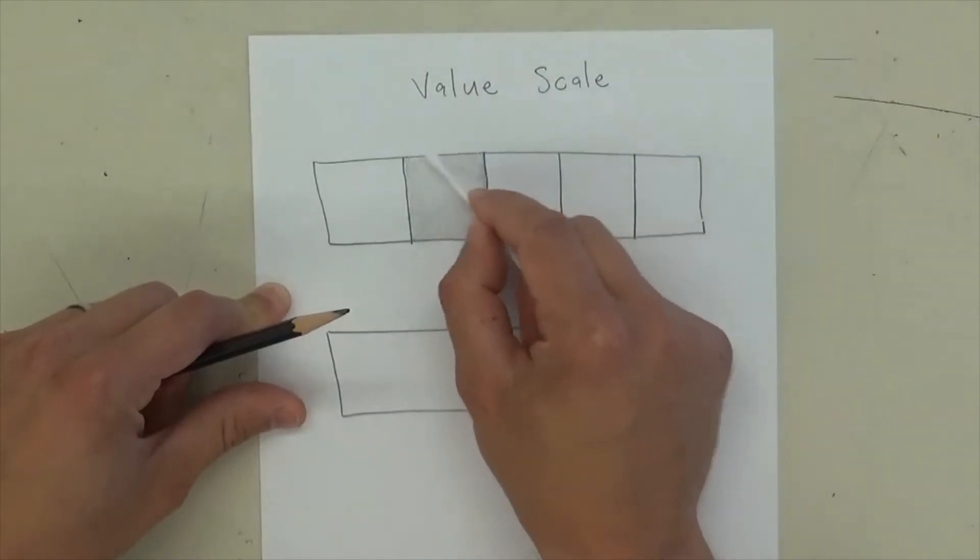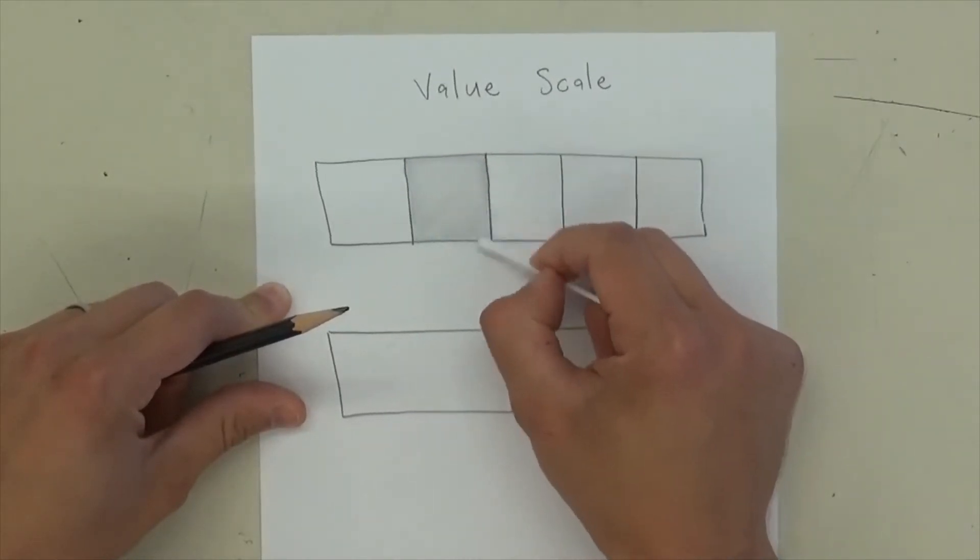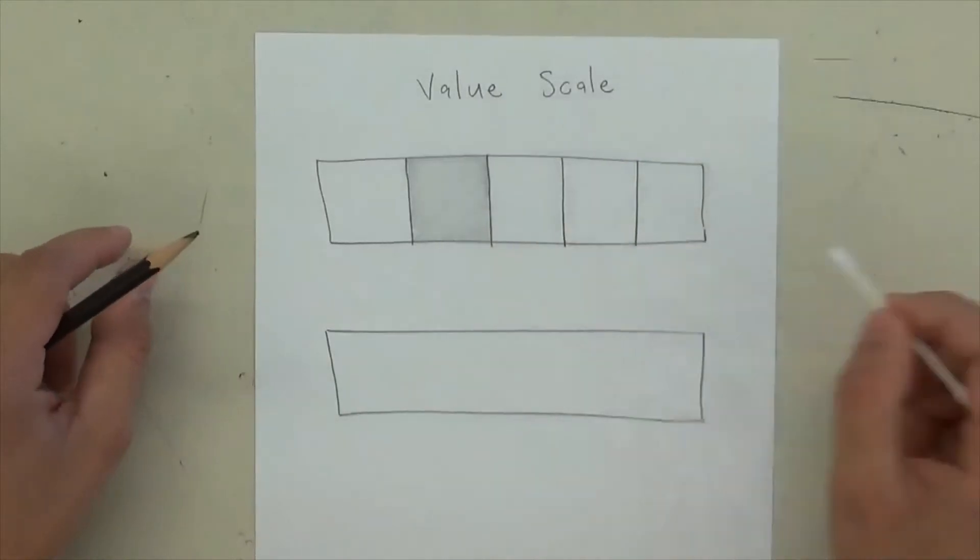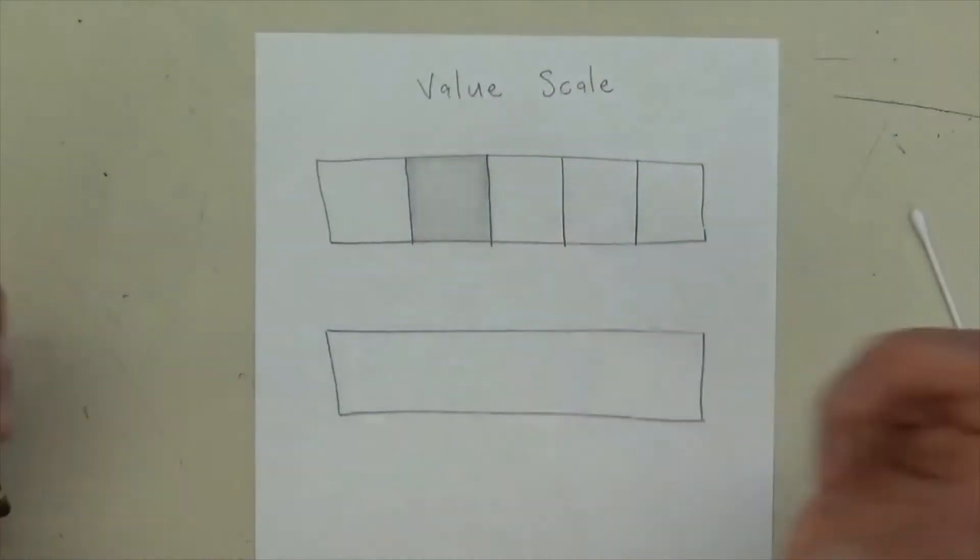and that'll just make it solid gray like that. It kind of gets rid of the lines, because you want a value. You don't want, it's not a line drawing, it's just gray, right?